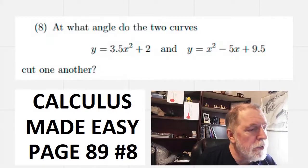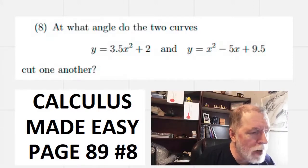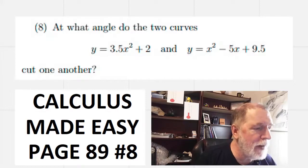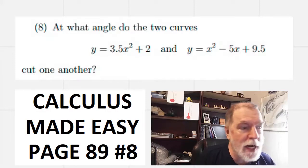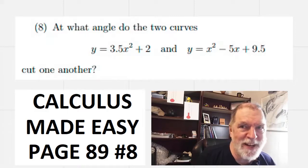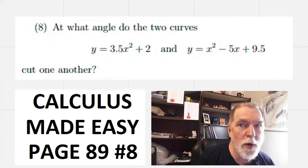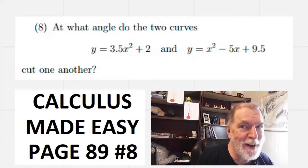At what angle do the two curves y equals three and a half x squared plus two and y equals x squared minus 5x plus 9.5 cut one another? We're looking for an angle.